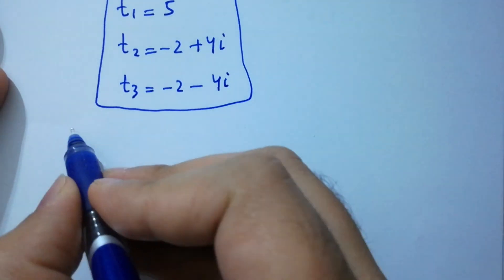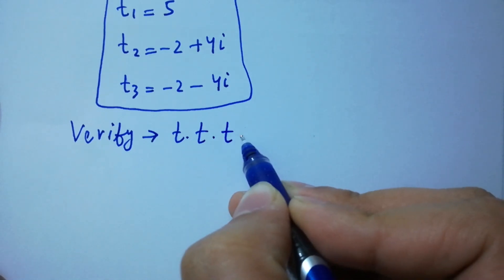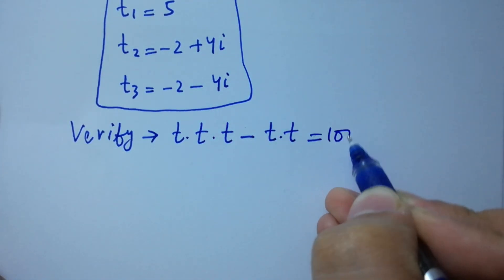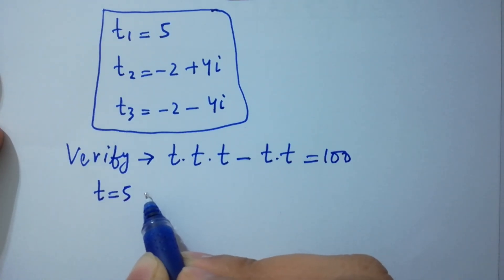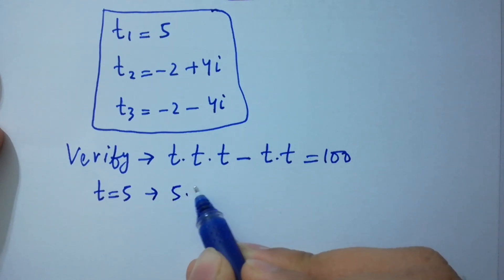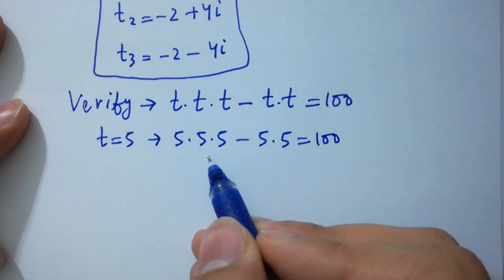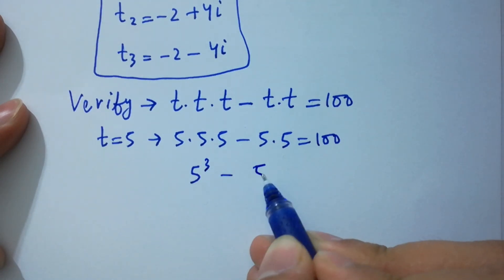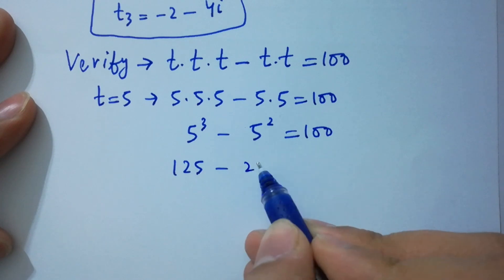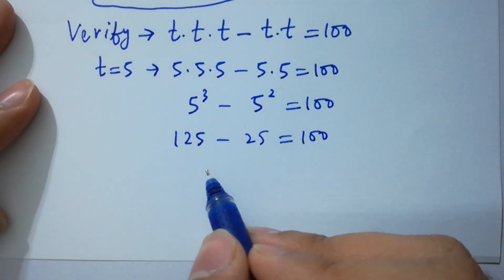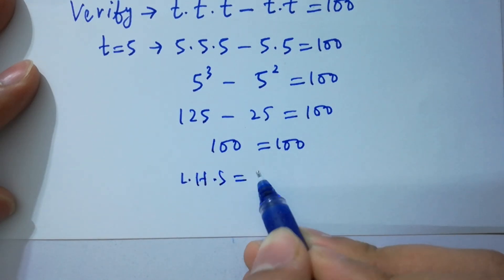Now I am going to verify: t times t times t minus t times t equals 100. Putting t equals 5: 5 times 5 times 5 minus 5 times 5 equals 100. That is 5 cubed minus 5 squared equals 125 minus 25 equals 100, and 125 minus 25 is indeed 100. Left-hand side equals right-hand side.